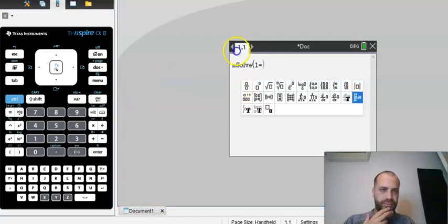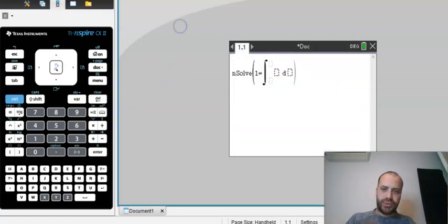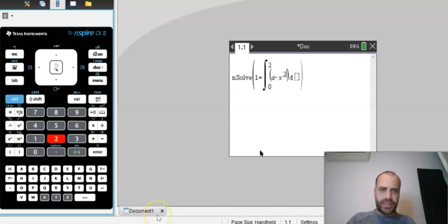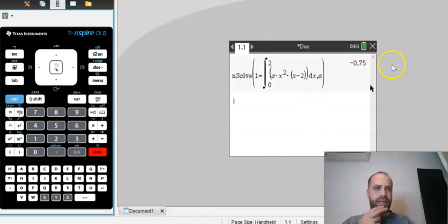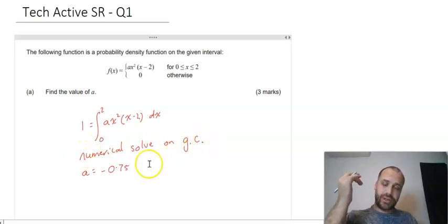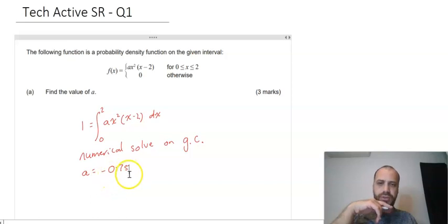So we're going menu, algebra, numerical solve, 1 equals, and we're going the integral between 2 and 0 of A times x squared and then bracket (x minus 2). We're going with respect to x and we're trying to solve this for the variable A, close up those brackets, pray, and we get an answer, negative 0.75.